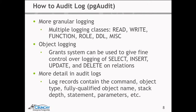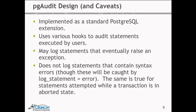We're also able to get a lot more information. The log records contain the command, object type, fully qualified object name, stack depth — so if you've got functions calling functions, it'll show you how far down the stack you were — the actual statement, parameters, and a couple of other things. It's implemented as an extension and uses a whole bunch of hooks into Postgres to figure out what's going on: a hook into the executor, a hook into the utility command, and hooks into various system table load statements.